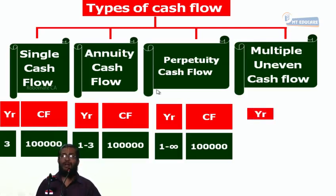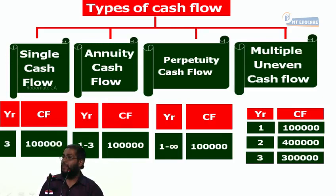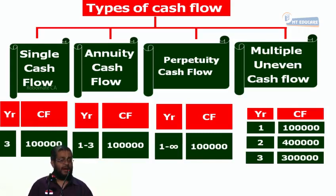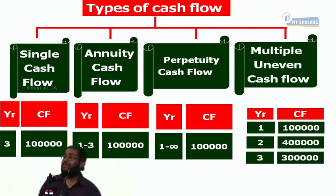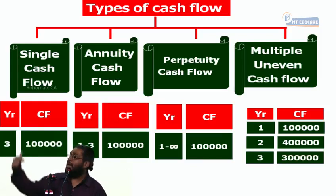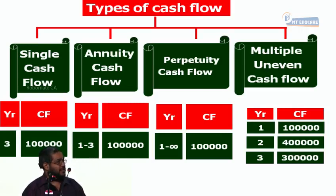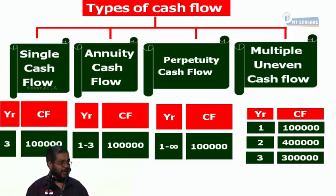Multiple uneven cash flow means different amounts received each year for a finite number of years. Apart from these four types, there is also something called growing perpetuity, which we will discuss during share valuation. These are the various types of cash flow patterns. We learn how to find the present value of each: single, annuity, perpetuity, and multiple uneven cash flows — because this is exactly what we do in bond valuation.